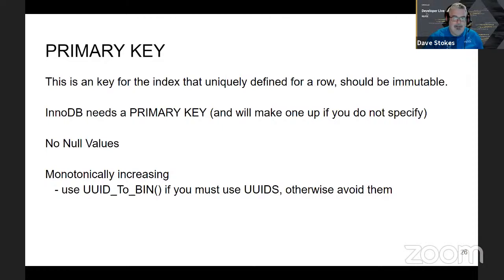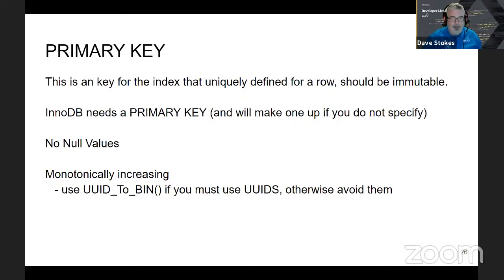The primary key should be uniquely defined for a row and should be immutable — you don't want to move stuff around later. InnoDB wants a primary key very badly. Please don't use NULL values in it, and it wants the numbers to monotonically increase: 1, 2, 3, 4, 5 or 10, 20, 30, 40. If you really love UUIDs, which do not monotonically increase and are a waste of space, we have a function called UUID_TO_BIN which will let you work with MySQL efficiently.